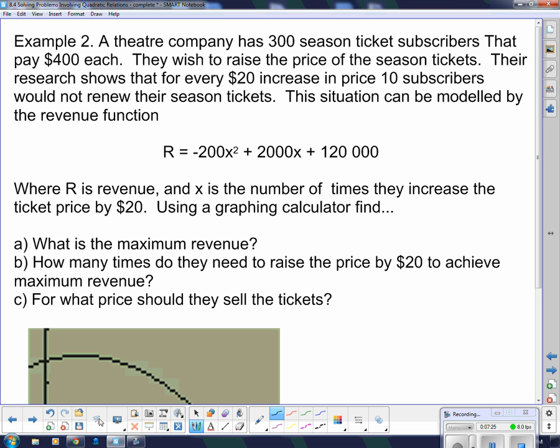A theater company has 300 season ticket subscribers that pay $400 each. They wish to raise the price of season tickets. Their research shows that for every $20 increase in price, 10 subscribers would not renew their season tickets. And this situation can be modeled by this equation right here. So, R is revenue and X is the number of times they increase their ticket price by $20. So we're going to use the graphing calculator.